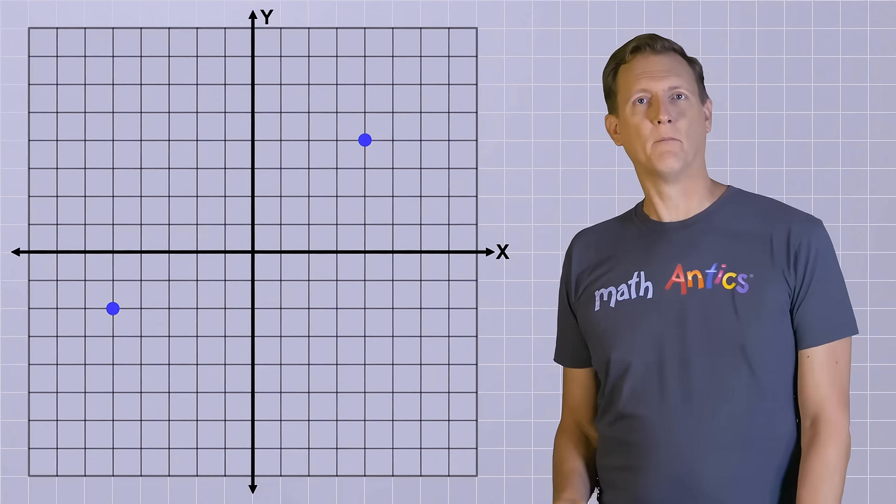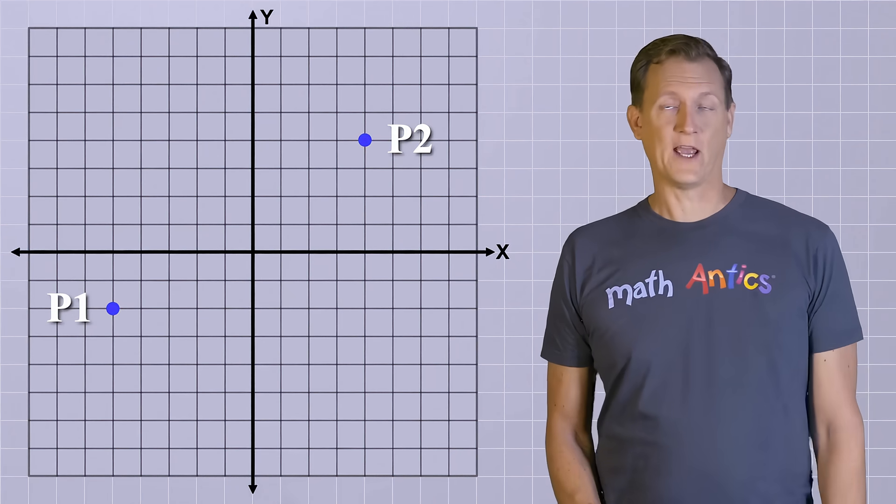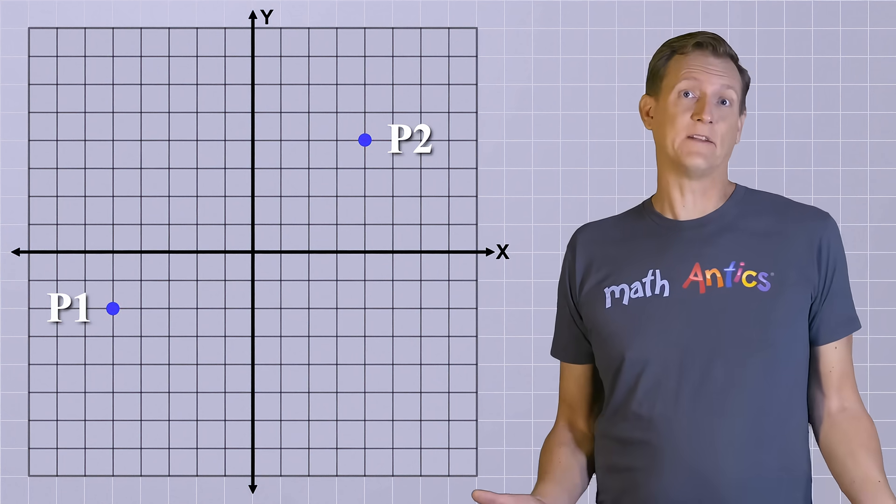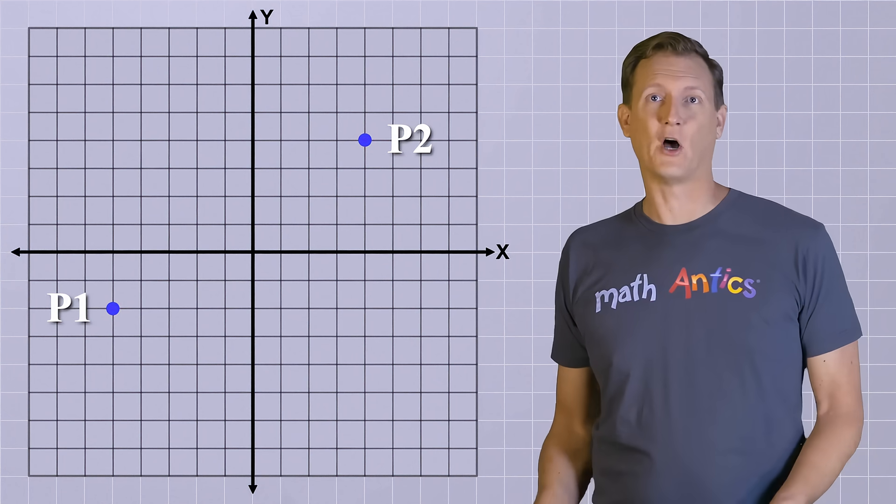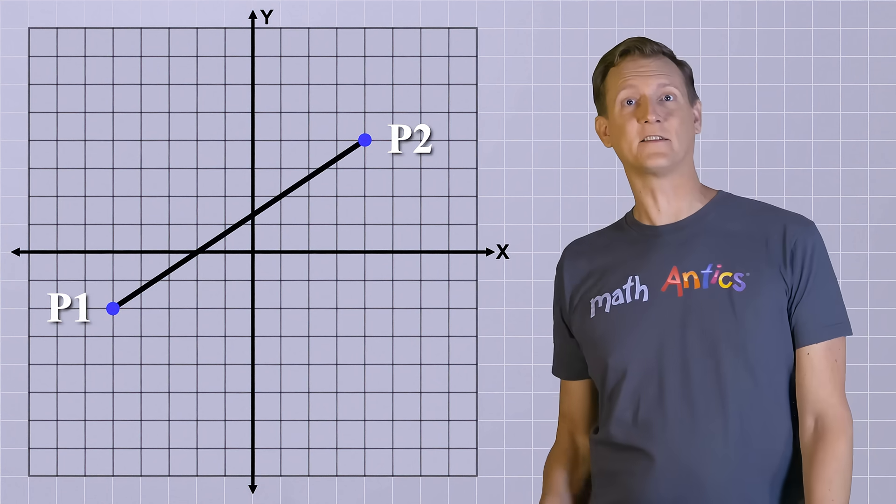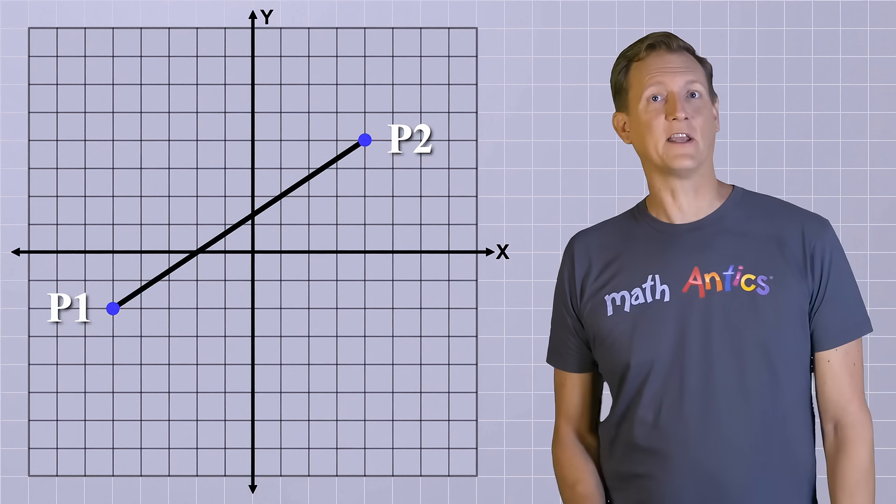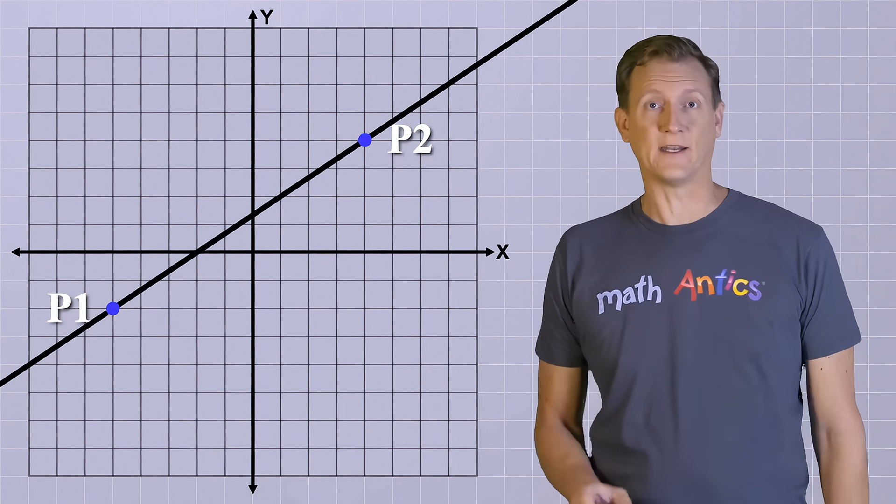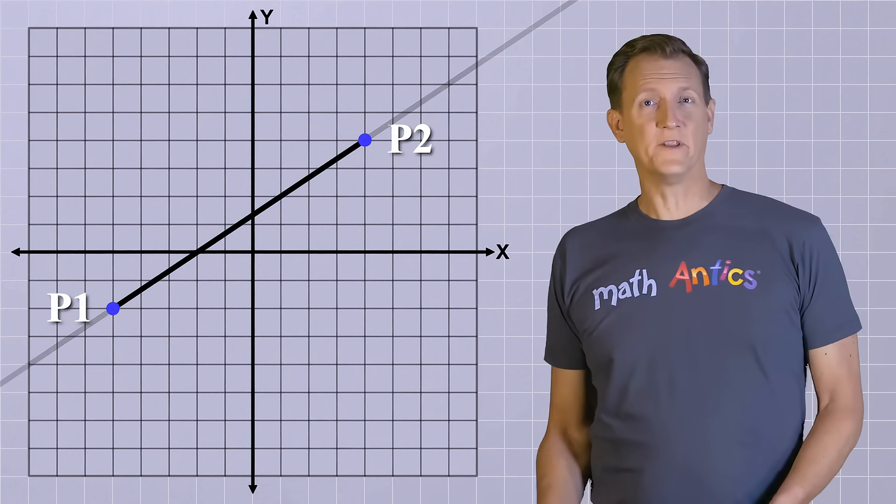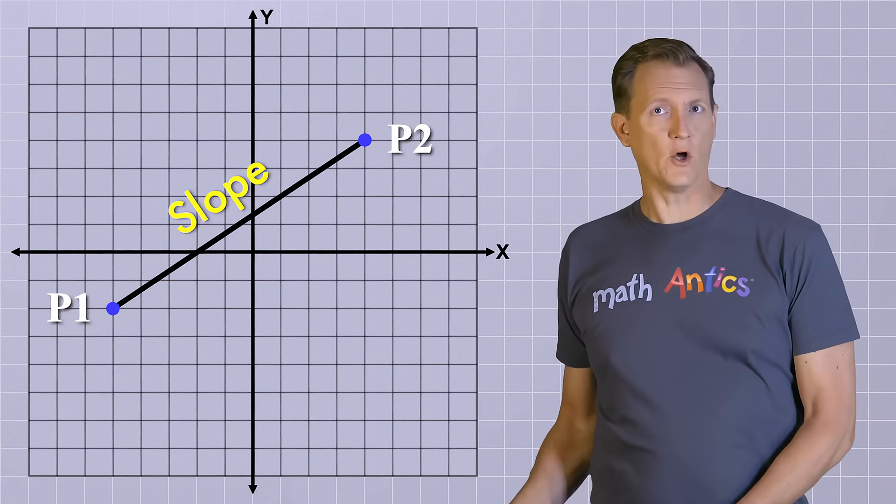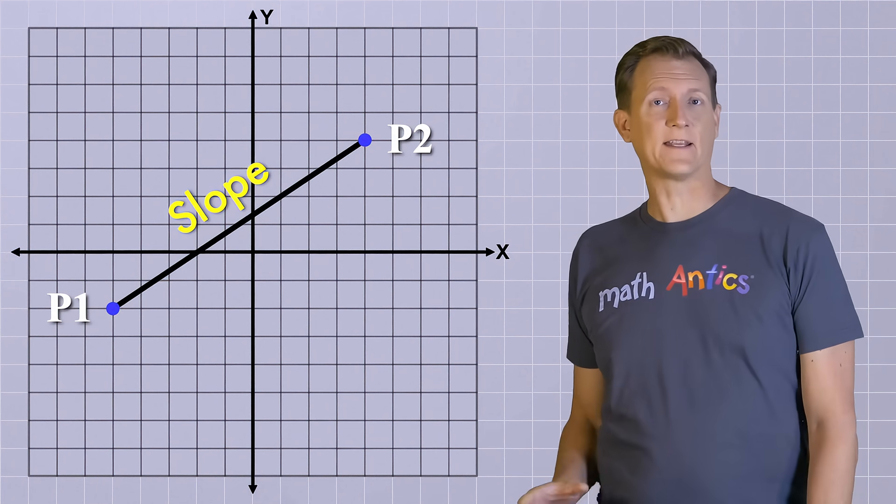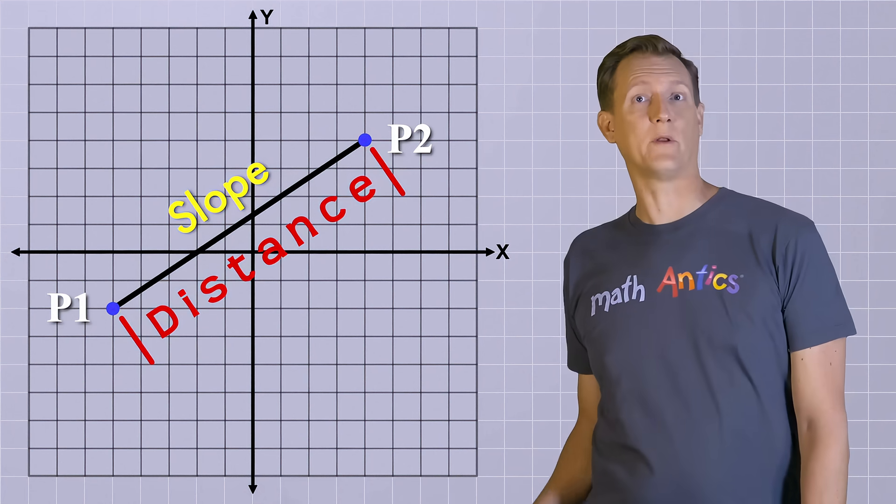We're going to name these points point 1 and point 2. As you know from geometry, a line can be defined by any two points. All you need to do is connect the dots to get a line segment and you can get the infinite line by extending that line segment in either direction. Our goal in this video is to learn how to find the slope of a line segment like this and to calculate the distance between its two endpoints.